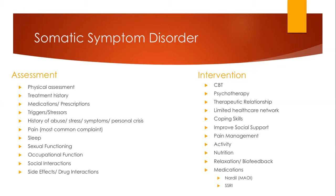For pain management, we want to focus on complementary or alternative medicines. A daily routine helps improve the illness and improve sleeping abilities. We can do nutritional interventions, relaxation techniques like biofeedback and stress management. If they do need medications, we can provide an antidepressant especially an SSRI or MAOI. Nardil is really effective in treating headache-related somatic symptoms, and we can use BuSpar for anxiety. For group therapy, we can help them focus on behavior changes, develop coping skills, improve social skills and feeling connected, and provide individual counseling to improve social support.